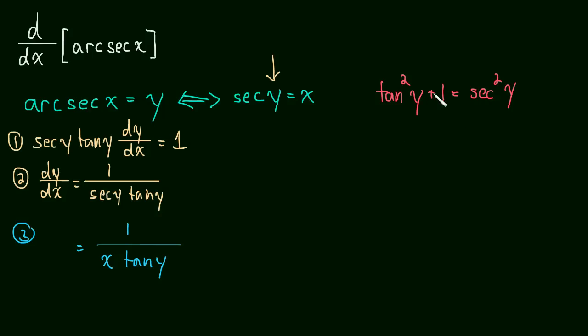So solve for tangent, subtract 1 and take the square root of both sides. And we get the tangent of y is equal to plus or minus the square root of secant squared y minus 1.